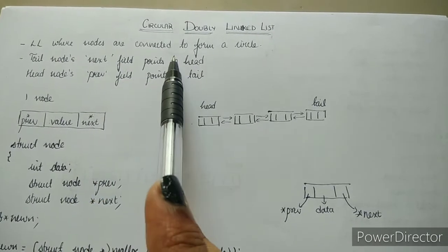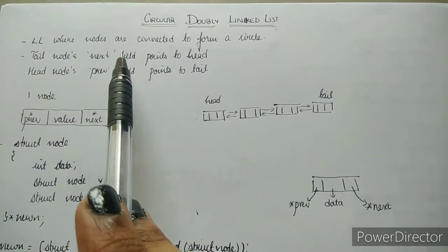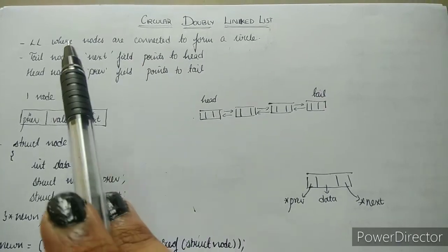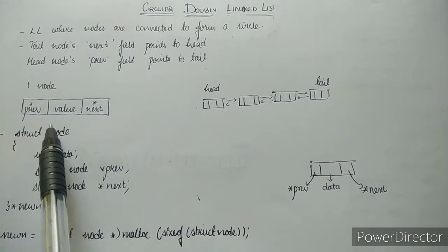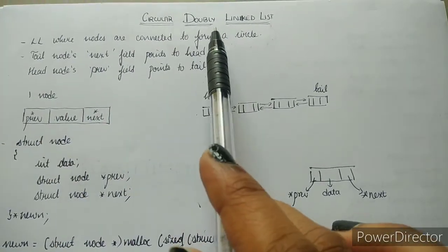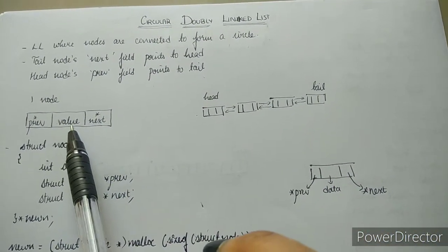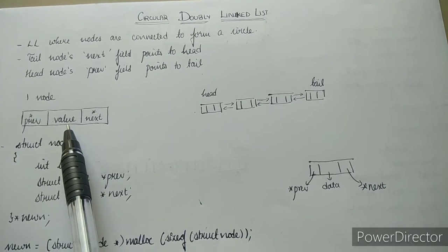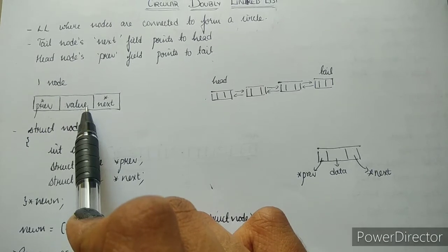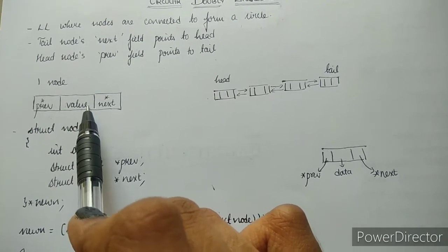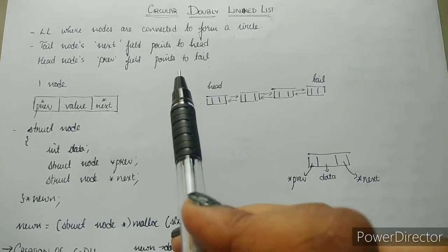A linked list where nodes are connected to form a circle. The tail node's next field points to head, and the head node's previous field points to tail. This is how a single node of a circular doubly linked list looks like. The node structure is the same as a doubly linked list — it has a previous field, a data field filled with a value, and a next field.